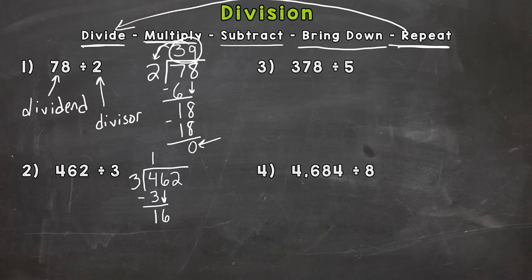16 divided by 3. How many groups of 3 can we pull out of 16? Or make out of 16? And that's 5. 5 times 3 we multiply now. 5 times 3 is 15. Subtract. 16 minus 15 is 1.